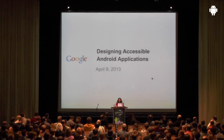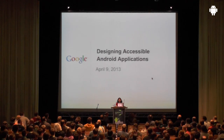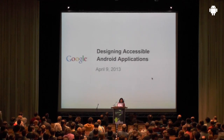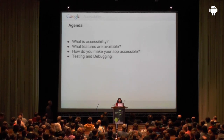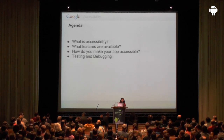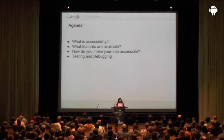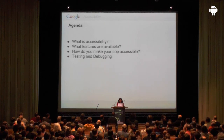Hopefully, after my talk today, you all will be inspired to go back and make your applications more accessible. So let's get started. My agenda for today covers: what accessibility means, what features are available in the framework and different versions of Android, what you need to do as a developer, and finally how to test your applications, along with some debugging tips.